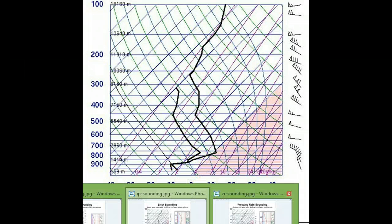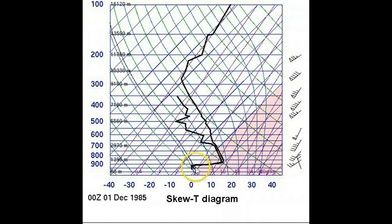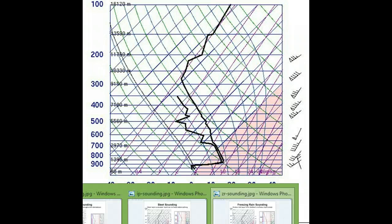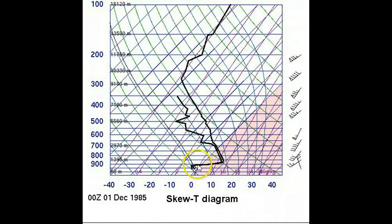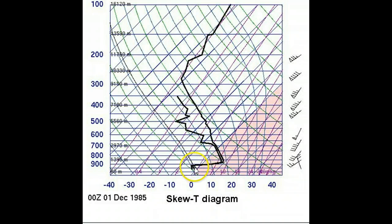Now, as far as freezing rain goes, here's your zero degree isotherm again. You have a very deep warm layer here — a much deeper warm layer — but it does go below freezing again at the surface. Look how shallow that cold layer is, as compared to the sleet sounding which has the deep cold layer. With freezing rain, it's very shallow cold air, so the snowflakes melt into raindrops and don't have time to refreeze into ice pellets. The rain falls to the surface, but when it hits things on the surface — because it's below freezing — that rain freezes on contact, and that's when we get freezing rain.